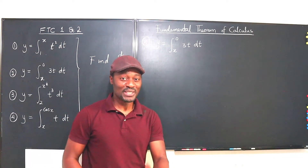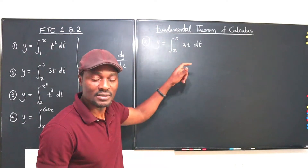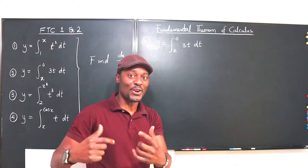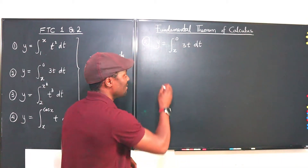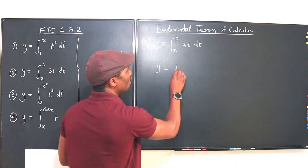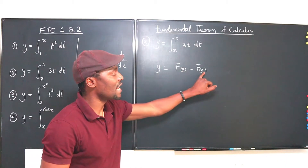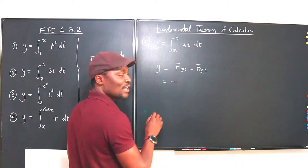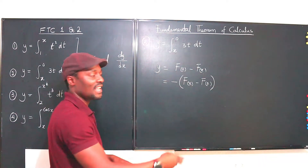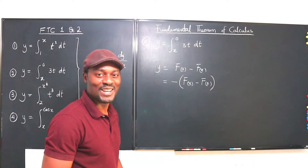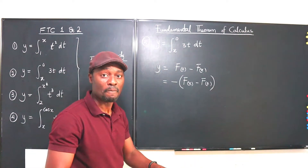Let's go to Example 2. For Example 2 it's just like Example 1, except that we have the lower limit being the variable and the upper limit being the constant. What you want to do to apply Part 1 of the FTC is to flip the variables. But according to Part 2, because we're subtracting and subtraction is not commutative, if you change the positions, y will be equal to F(0) minus F(x). To make things work, we put a minus sign so that we have F(x) minus F(0). We've not changed anything — we're just rearranging. So we put a negative sign and flip these two limits.